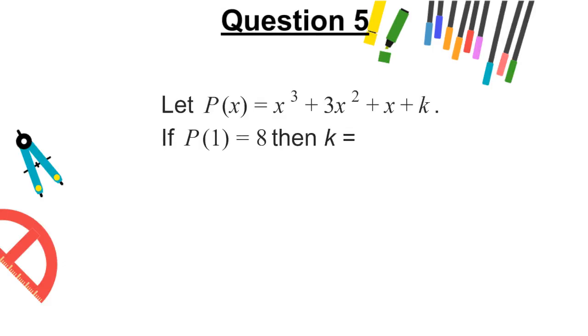Question 5. Let p(x) = x³ + 3x² + x + k. If p(1) = 8, then k equals A, -3, B, 11, C, 9, or D, 3.